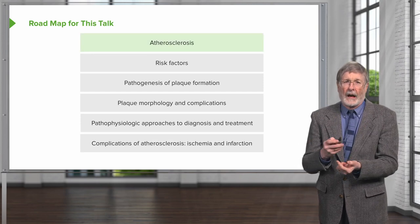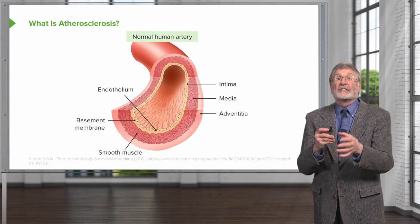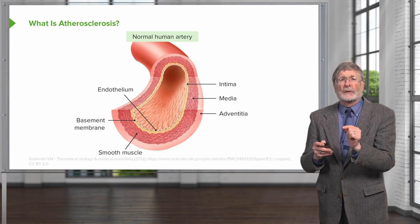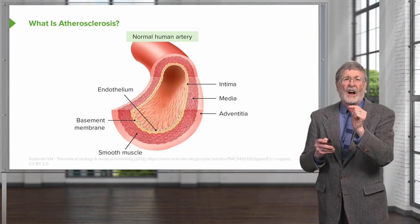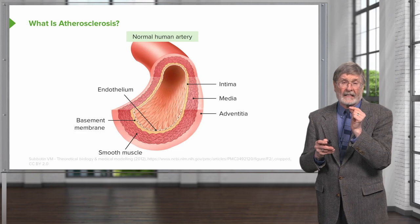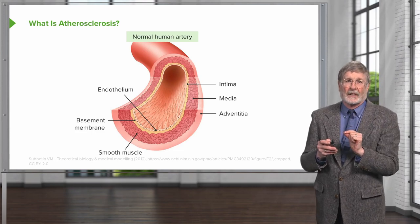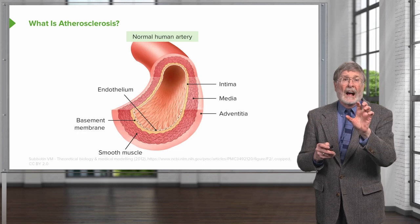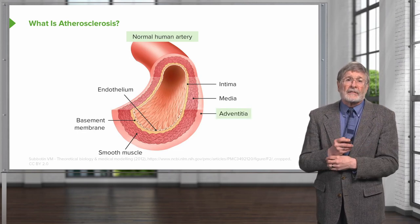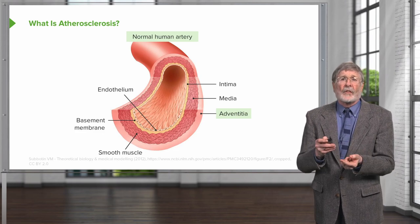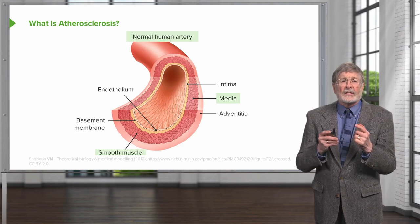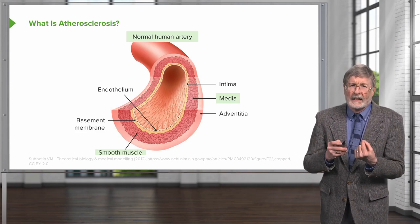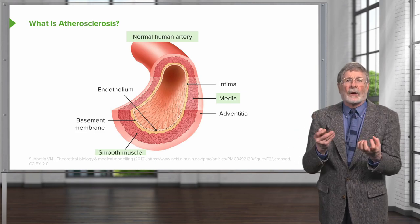An overview of atherosclerosis. Let's start with your typical arterial wall. We're starting mostly with arteries because atherosclerosis is predominantly a disease of arteries, not of veins, although you can get venous atherosclerosis under some circumstances. There is an outer layer of loose connective tissue and fat called the adventitia. The next layer in is the media, largely composed of smooth muscle cells with a little bit of extracellular matrix.